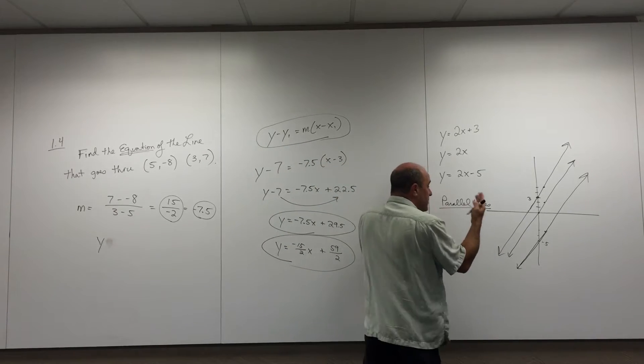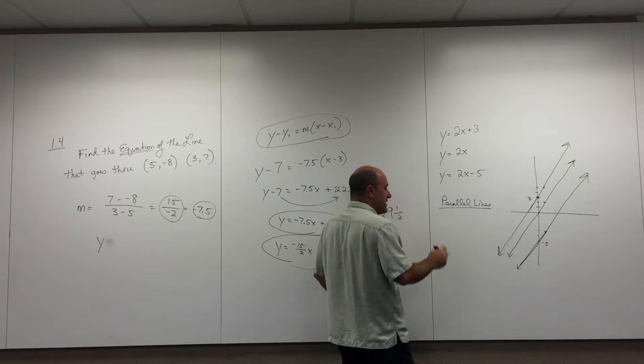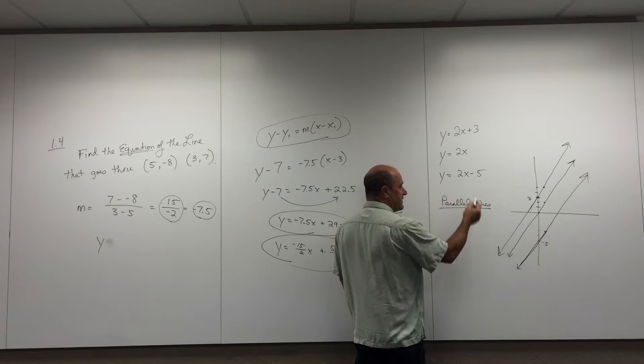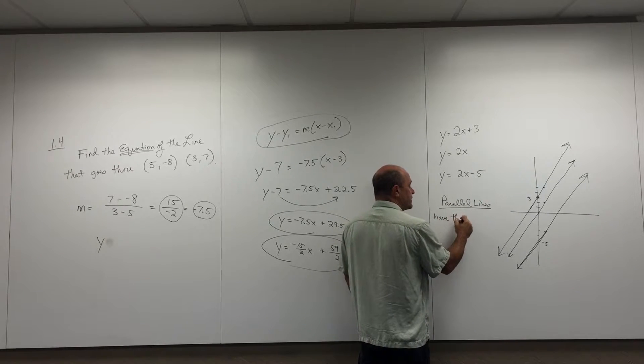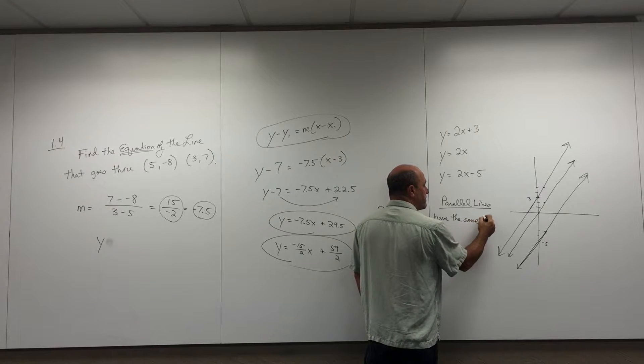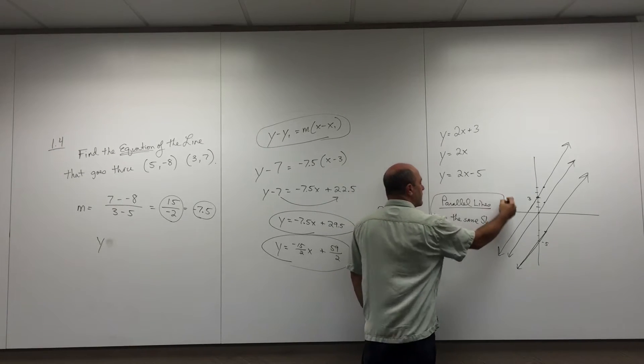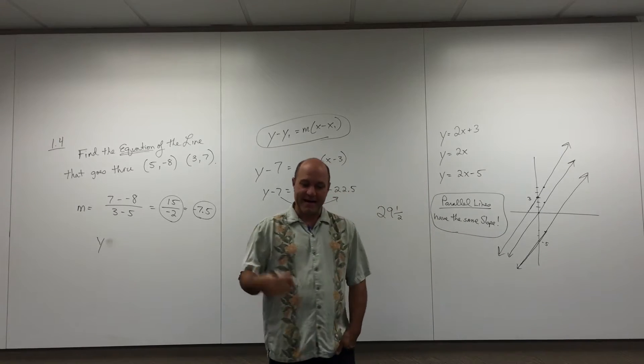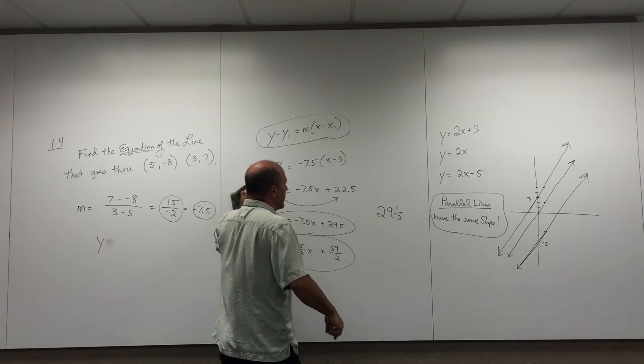Maybe you knew that idea. Maybe this is the first time you saw that idea. It's a very common sense idea. If everything is rising and running the same amount, aren't they going to be parallel? It totally makes sense, especially after you graph three lines. So this fact: parallel lines have the same slope. That's just a true fact, and I think it's very common sense.